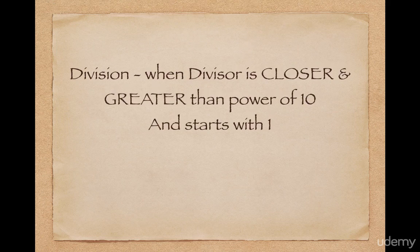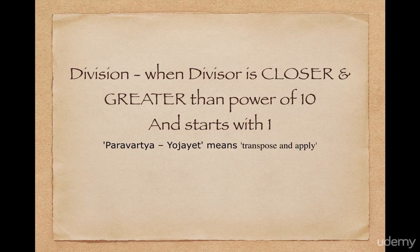In this lecture, I am going to cover a specific type of division problems — division problems when the divisor is closer and greater than a power of 10, and the divisor must start with 1. I will use the concept Paravartya Yogyet, a Sanskrit word which means 'transpose and apply.' To transpose a number, just change the sign from positive to negative and vice versa.